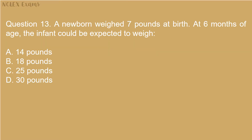Question 13: A newborn weighed 7 pounds at birth. At 6 months of age, the infant could be expected to weigh: A. 14 pounds, B. 18 pounds, C. 25 pounds, D. 30 pounds.